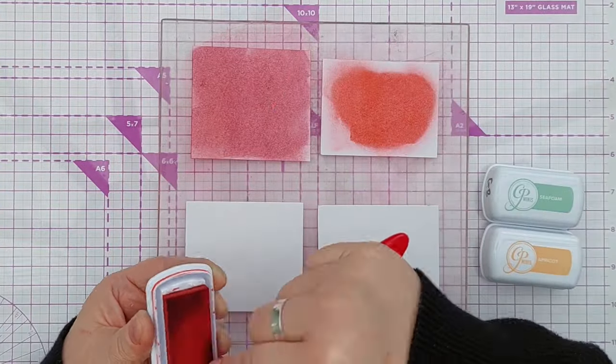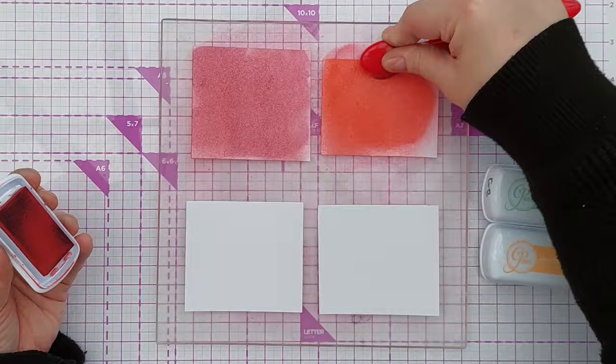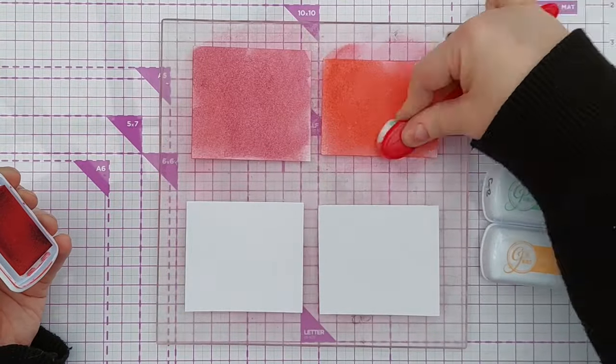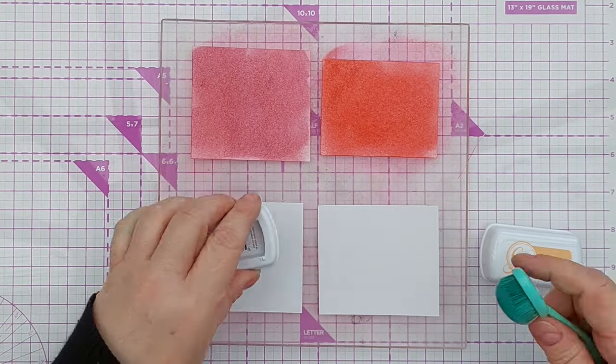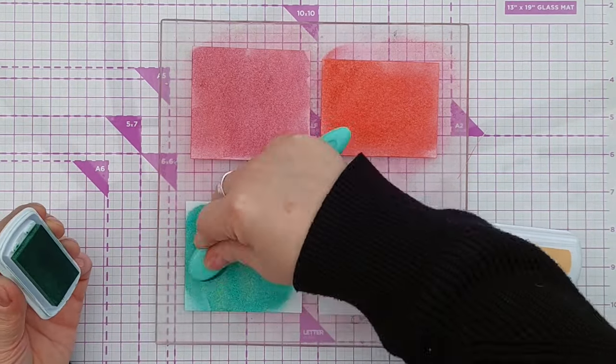So these are Catherine Pooler inks, I think they're all from the spa collection. We've got rose petals, polished, seafoam and apricot, and as I say they give me a sunny summery feel.